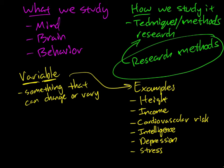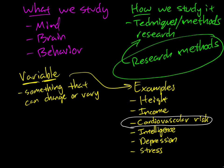The simplest kind of study we could do would be to just investigate one variable by itself. For example, as a health psychologist I might just want to study cardiovascular risk in a particular city — what is the level of risk, how much are people at risk of having a heart attack? That could give useful information. But much more often, rather than just looking at one variable by itself, we really want to understand the relationships between variables.